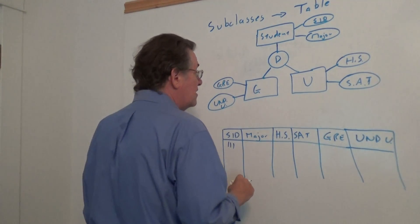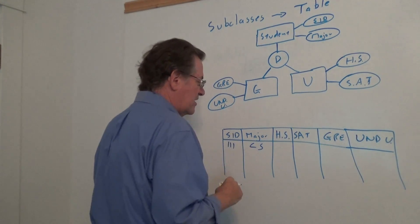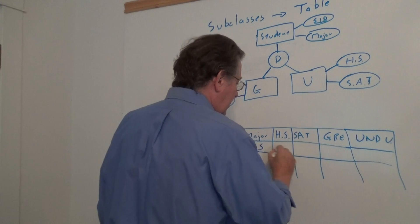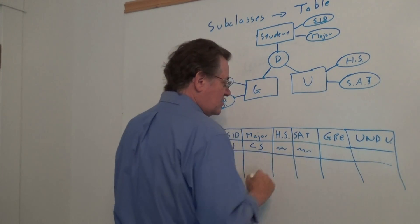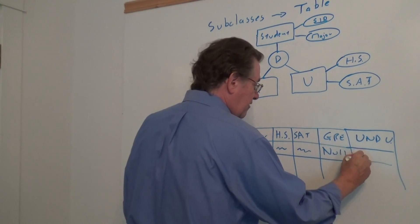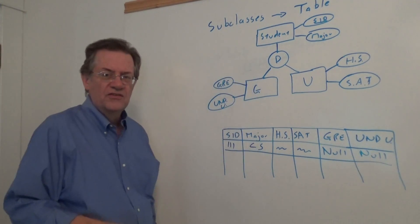They'd have a major, let's say CS, computer science. If they were an undergraduate, they'd have a value there for high school. They'd have an SAT score, but for the GRE, we would have null there. And for the undergraduate, we would have null there also.